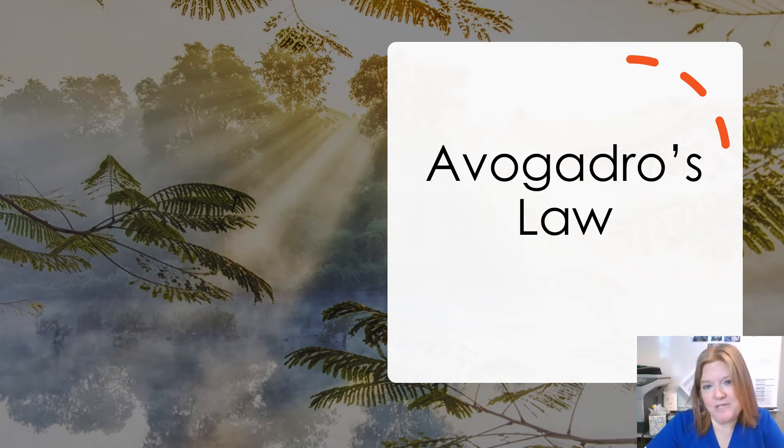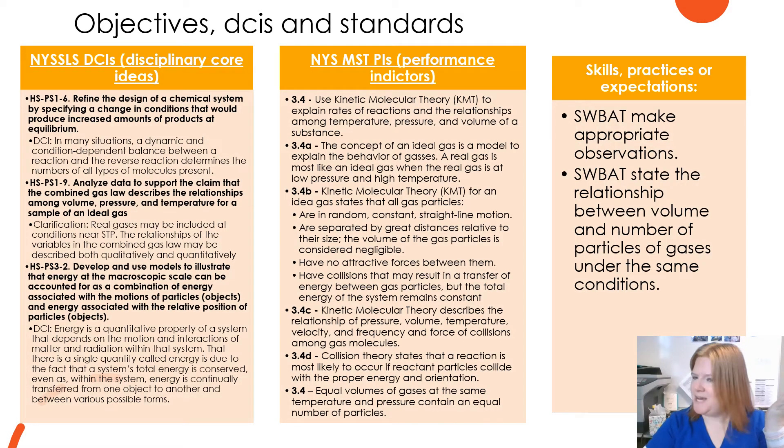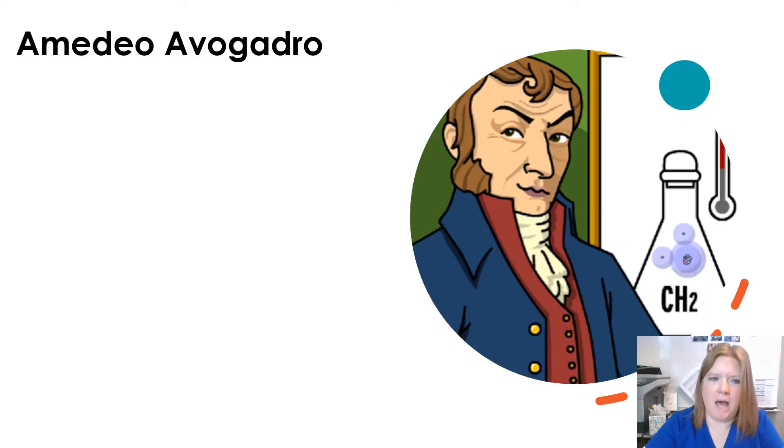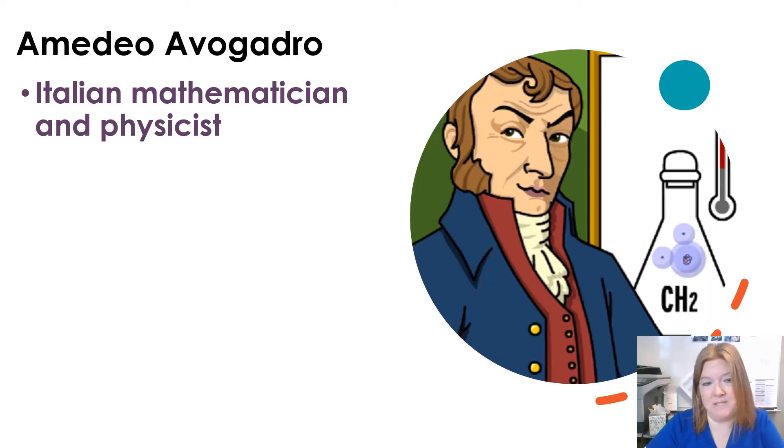All right, ready? Avogadro's law. Objectives, pause it, peruse it, if you so wish. All right, so who exactly was Avogadro? Well, Amadeo Avogadro was an Italian mathematician and physicist. He came up with Avogadro's law.